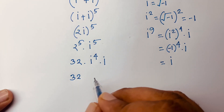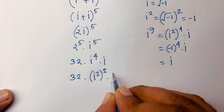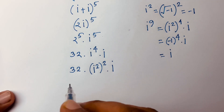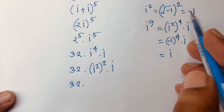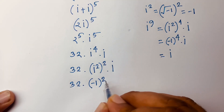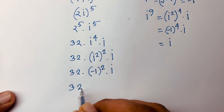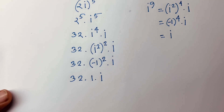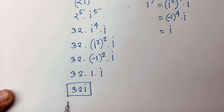Now i to the power 4 equals (i²)² equals (−1)² equals 1. So we have 32 times 1 times i, which equals 32i. Adding both parts: i plus 32i gives us a final answer of 32i.